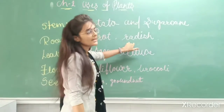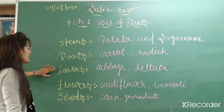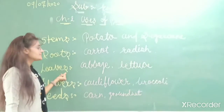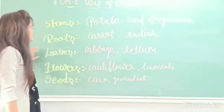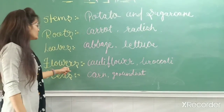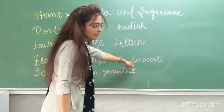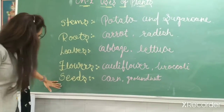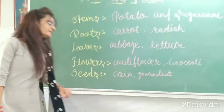Carrots and radishes are root vegetables. Next are leaves — cabbage and lettuce come under leaves. Next are flowers — cauliflower and broccoli come under flowers. Last one is seeds — corn and groundnut come under seeds.